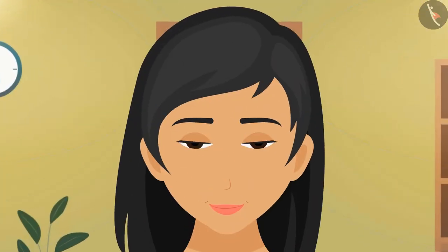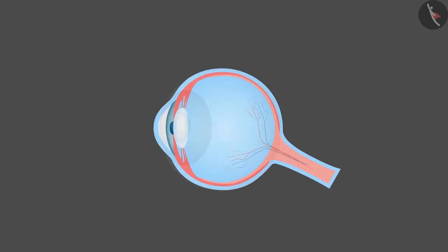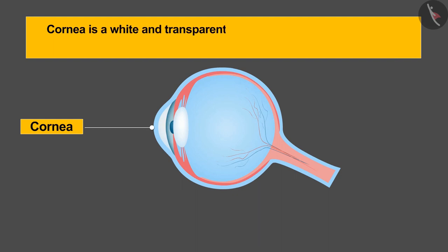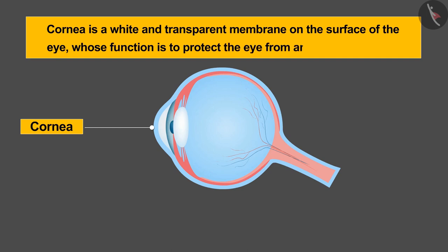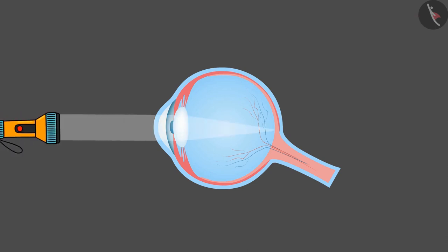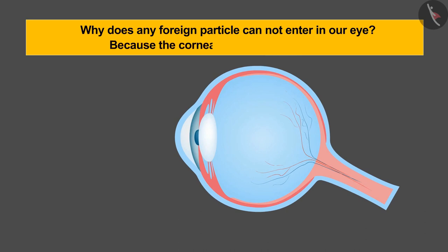The human eye is roughly round in shape. The first part of the eye is called the cornea. Cornea is a white and transparent membrane on the surface of the eye whose function is to protect the eye from any foreign particle. Being transparent, only light can enter into the eye. Have you ever thought why any foreign particle cannot enter our eye? Because the cornea stops it on the surface.